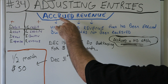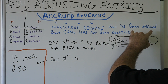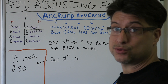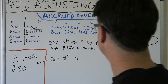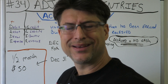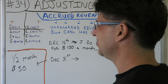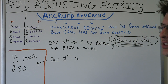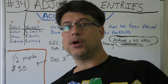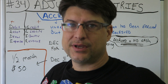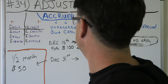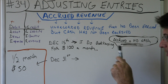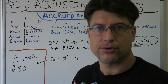The definition of accrued revenue from the book: unrecorded revenue that has been earned. So I did some work — what happens when you do work for somebody? You get money! But cash has not been received. You're going to do a journal entry for accrued revenue. You earned the money, you did the work, but you didn't get paid. I wrote on my paper every day: accrued equals no cash.